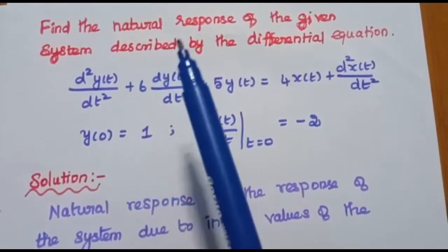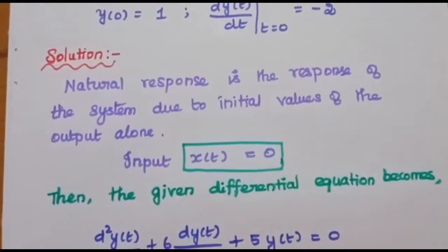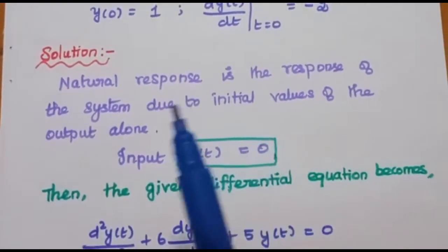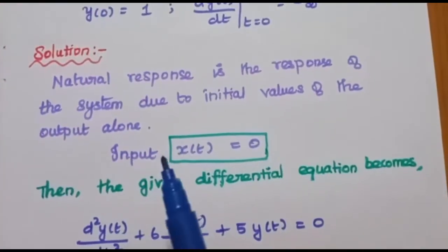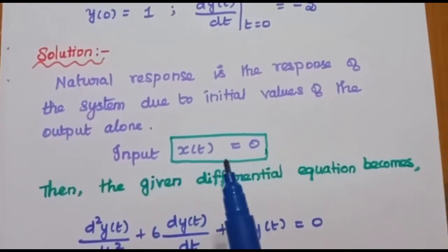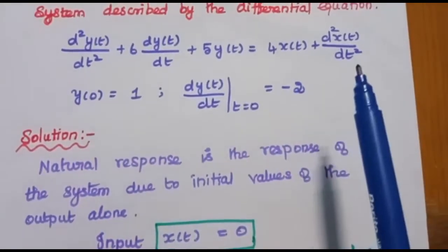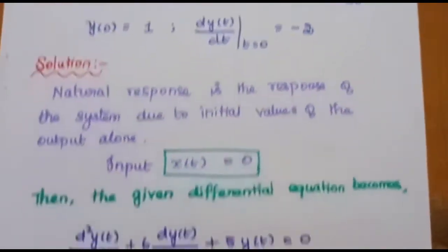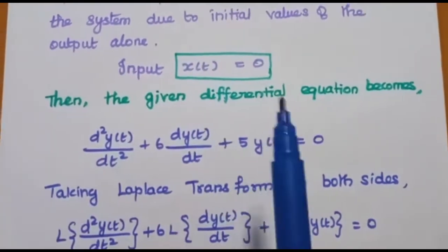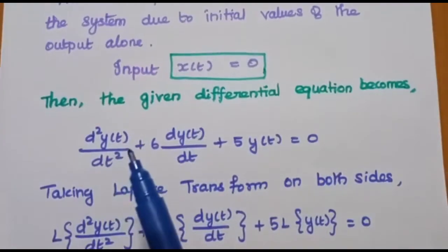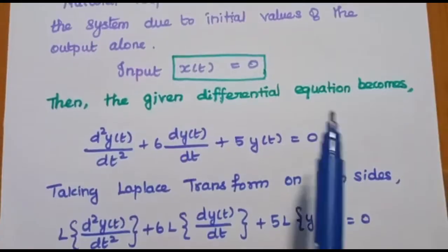Here the question is to find the natural response. As we know, the natural response is the response of the system due to initial values of the output alone, and the input is 0. So whatever is given on the right hand side with x of t should be 0. The given differential equation then becomes d squared y of t by dt squared plus 6 dy of t by dt plus 5 y of t is equal to 0.